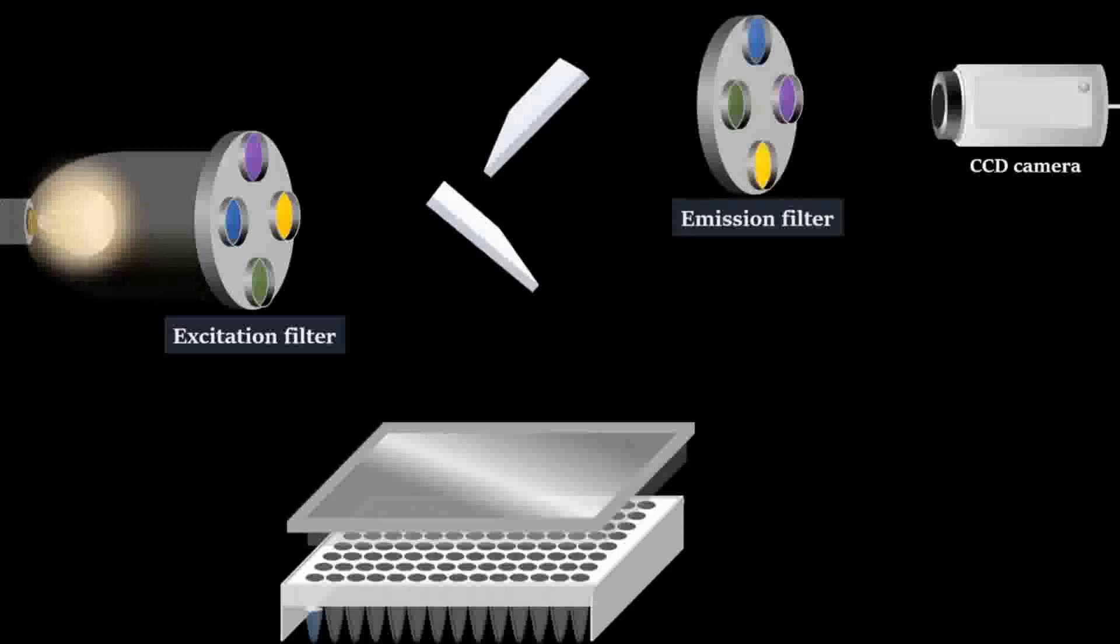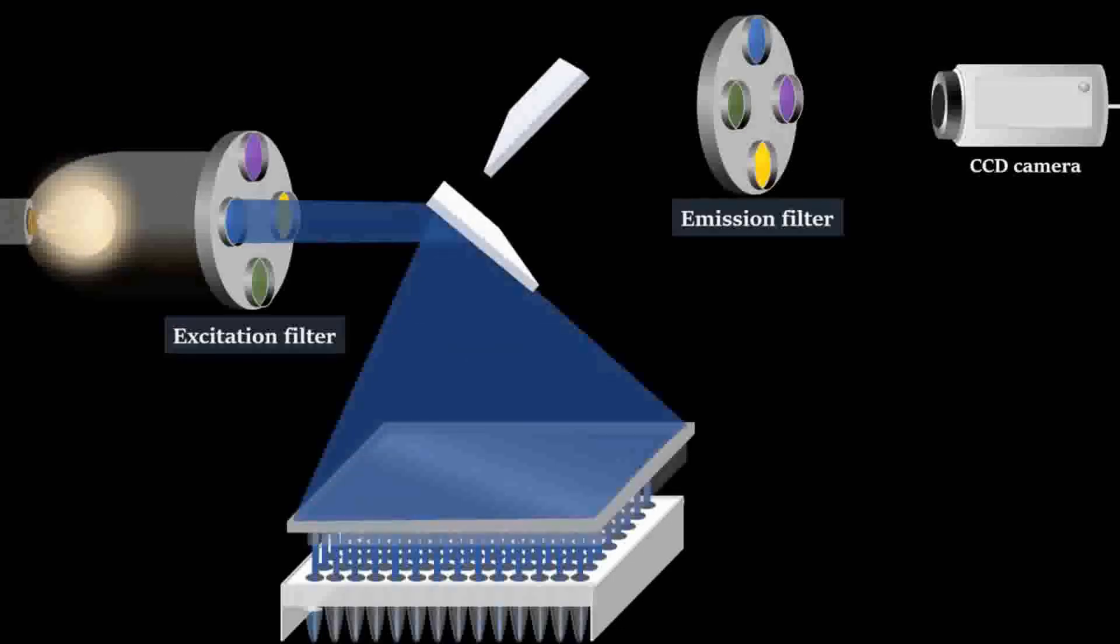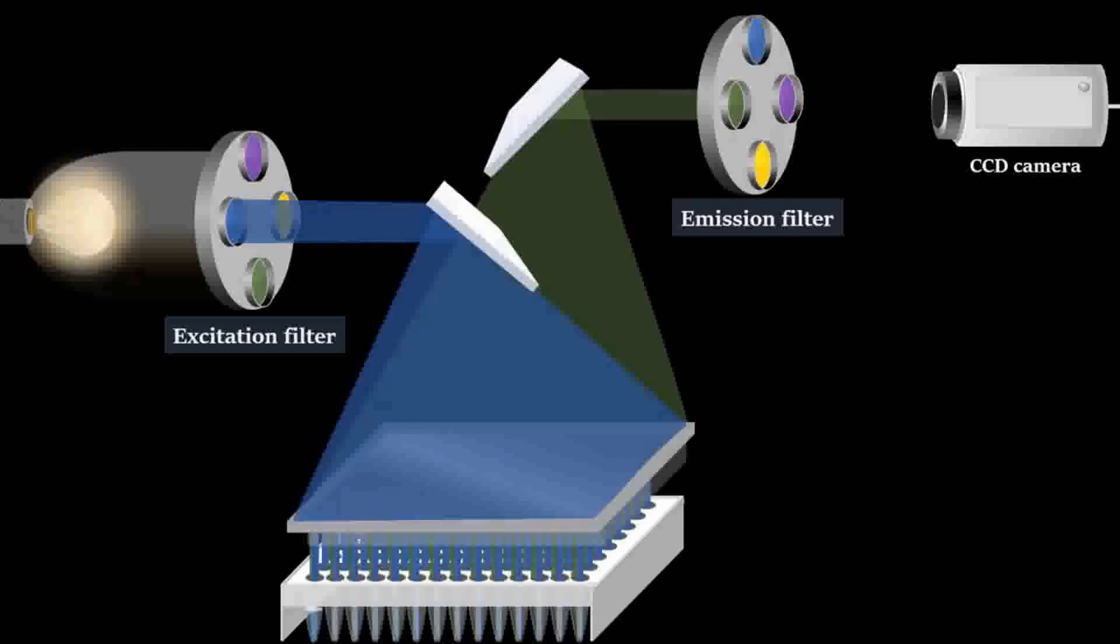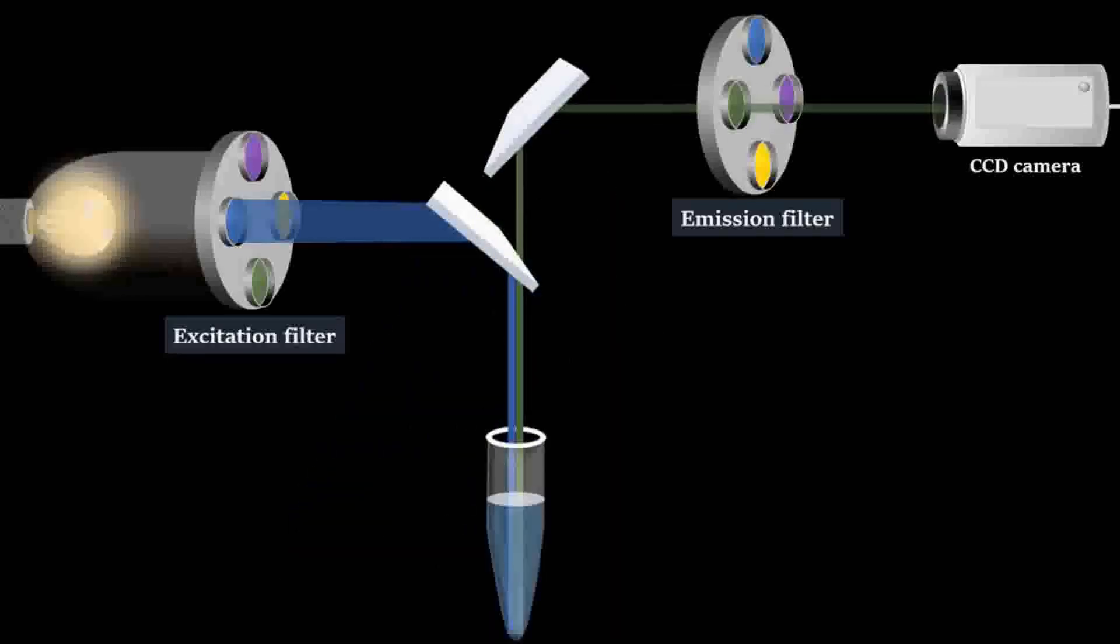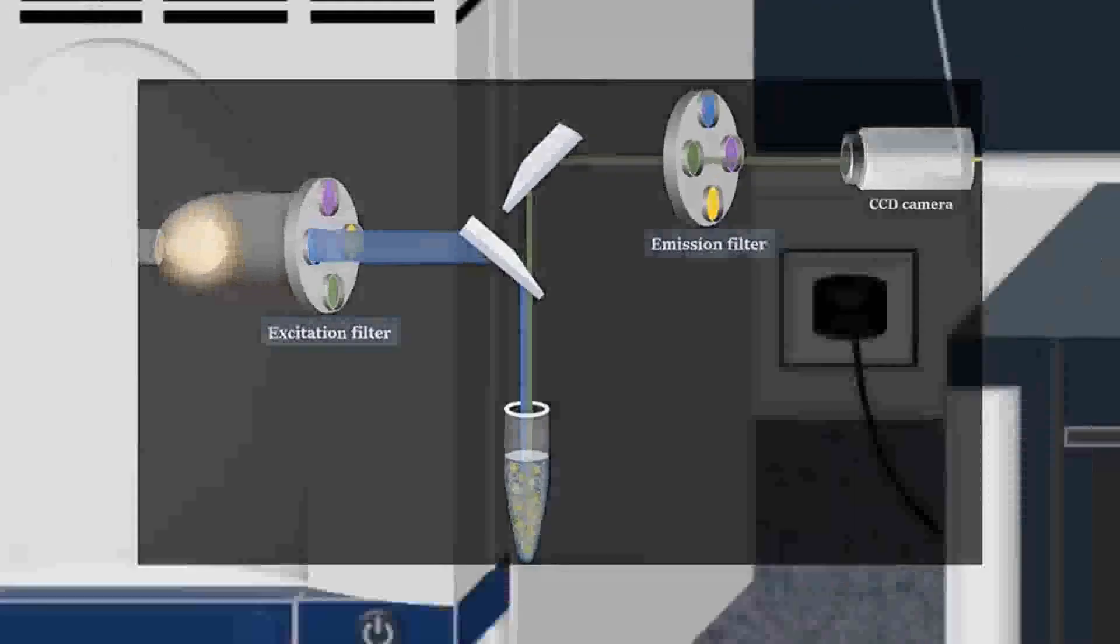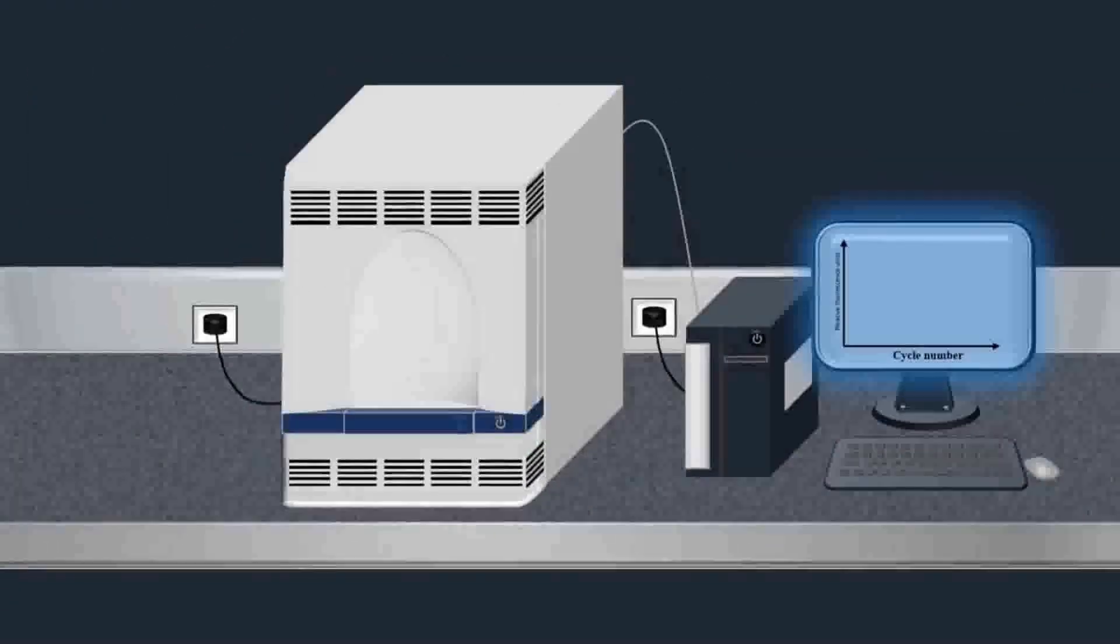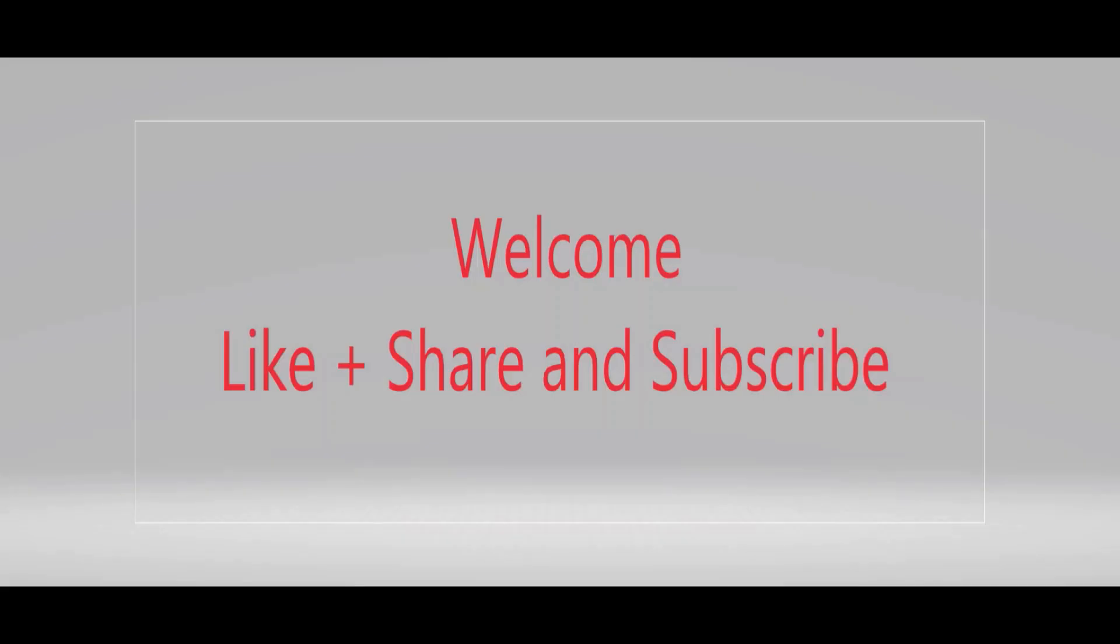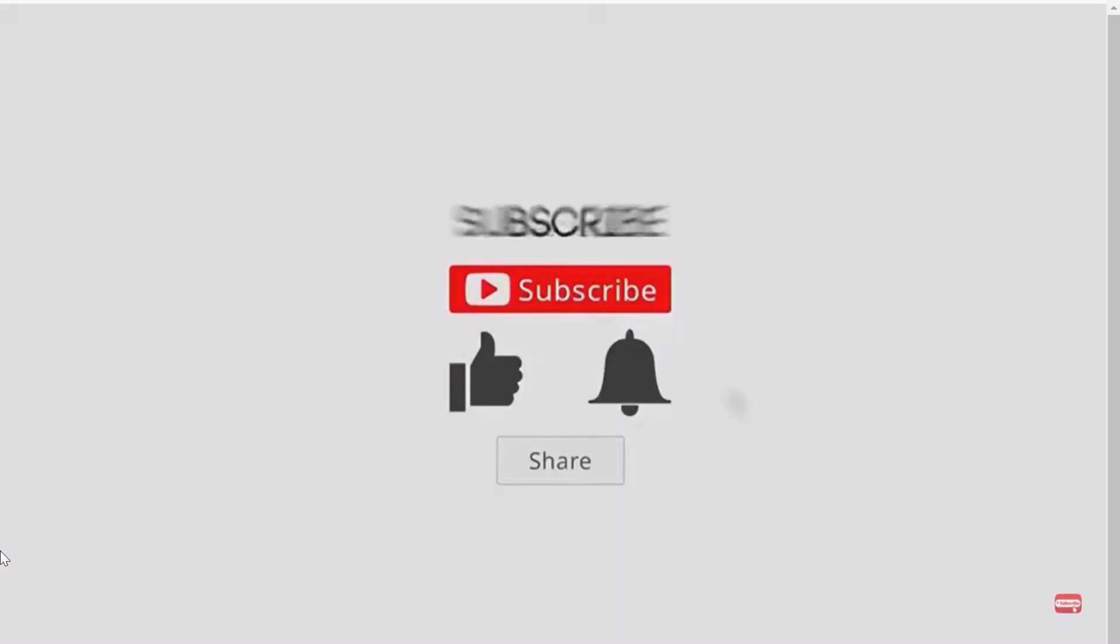For the measurement of the fluorescence signal, a tungsten halogen lamp, an excitation filter, mirrors, lens, an emission filter, and a charge-coupled device (CCD) camera are used. Filtered light from the lamp is reflected off a mirror, passes through a condensing lens, and is focused into the center of each well. Then fluorescent light emitted from the wells reflects off the mirror, passes through an emission filter, and is detected by the CCD camera. In each PCR cycle, light from the excited fluorophore can be detected by the CCD, which converts the light that is captured into digital data. This method is known as real-time PCR, which allows the monitoring of the progress of the PCR reaction as it occurs in real-time.